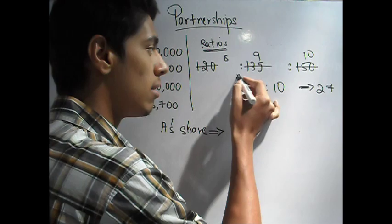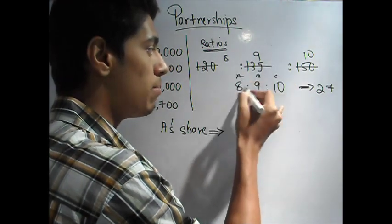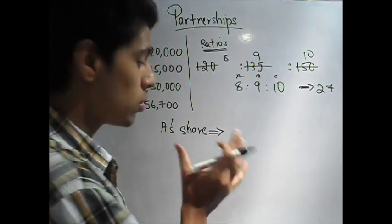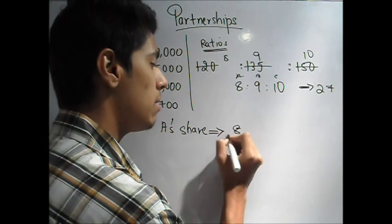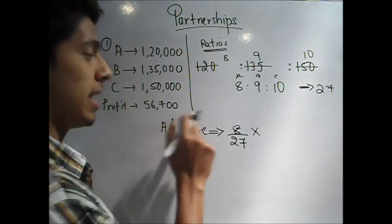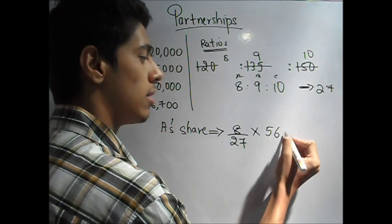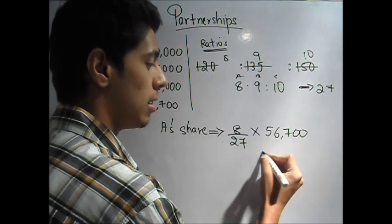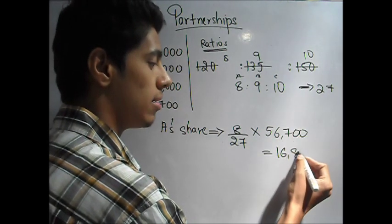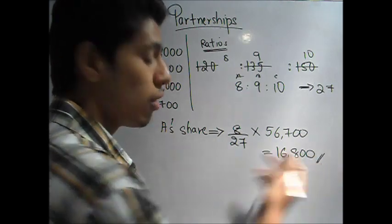You can see A has 8 parts out of every 27. So, A's share will be 8 by 27 of the total profit. That is 56,700. This comes out to be 16,800. This is how you find A's share.